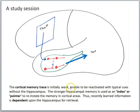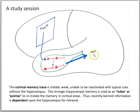The cortical memory trace is initially weak, unable to be reactivated with typical cues without the hippocampus. The stronger hippocampal memory is used as an index or a pointer to reinstate the memory in the cortical areas. Thus, recently learned information is dependent upon the hippocampus for retrieval. While the cortex perhaps made some slight modifications — synaptic plasticity had occurred in the cortex to some extent — the hippocampal plasticity event is the more significant one early on.